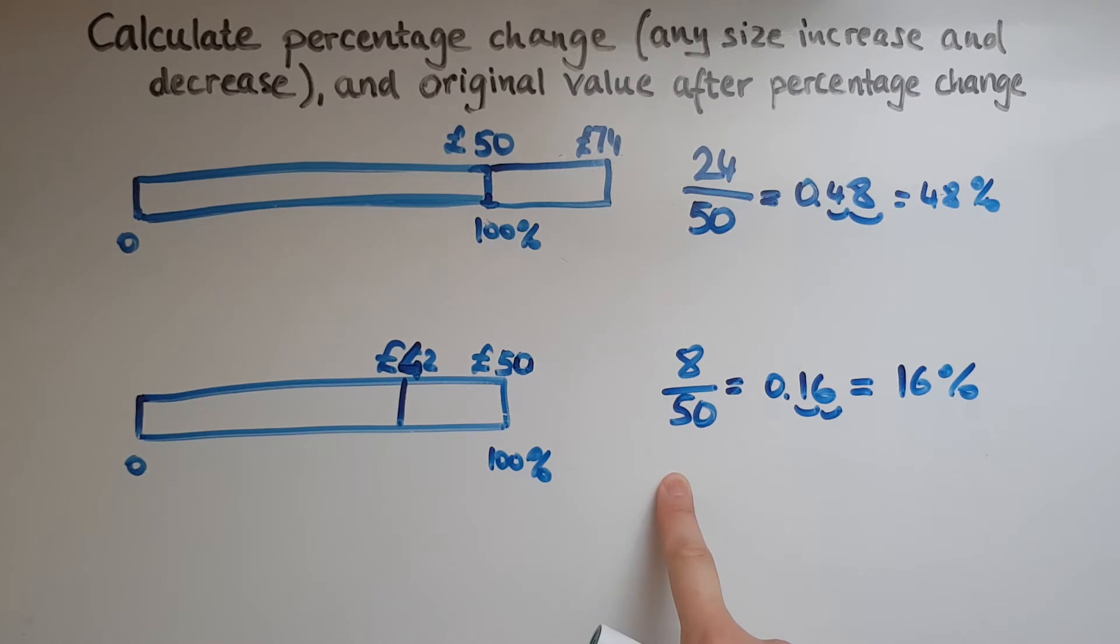And now we have here a decrease. So it went from 50 to 42. What was the change? It was 8 pounds. So 8 out of the original which was 50. 8 over 50 or 8 divided by 50 gives us 0.16.